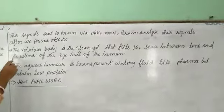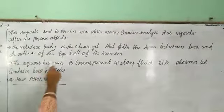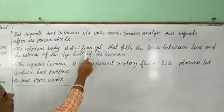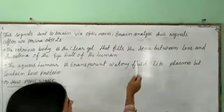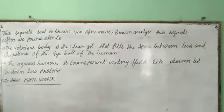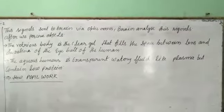The next part is the vitreous body. This is a clear gel that fills the space between the lens and the retina of the eyeball.